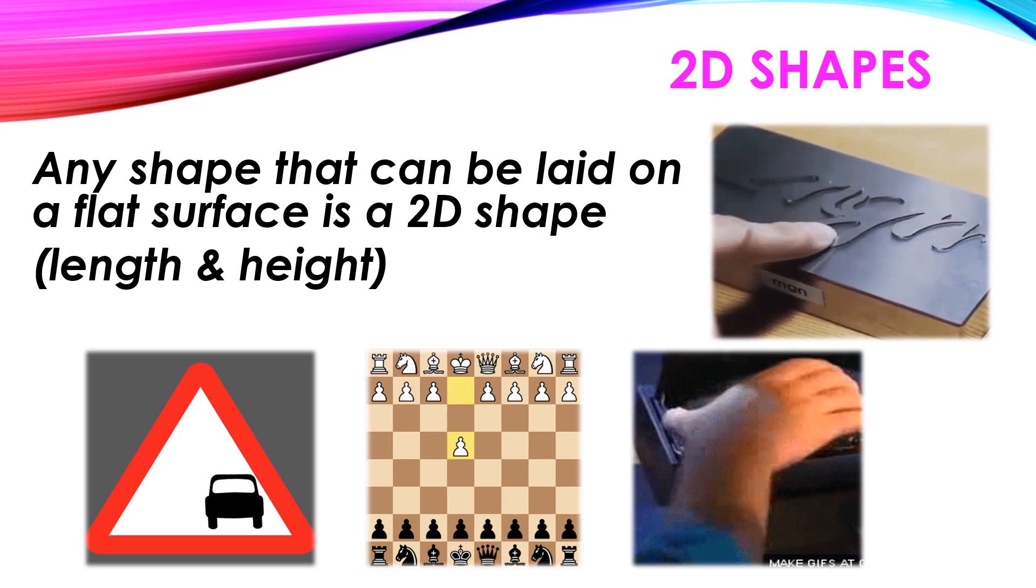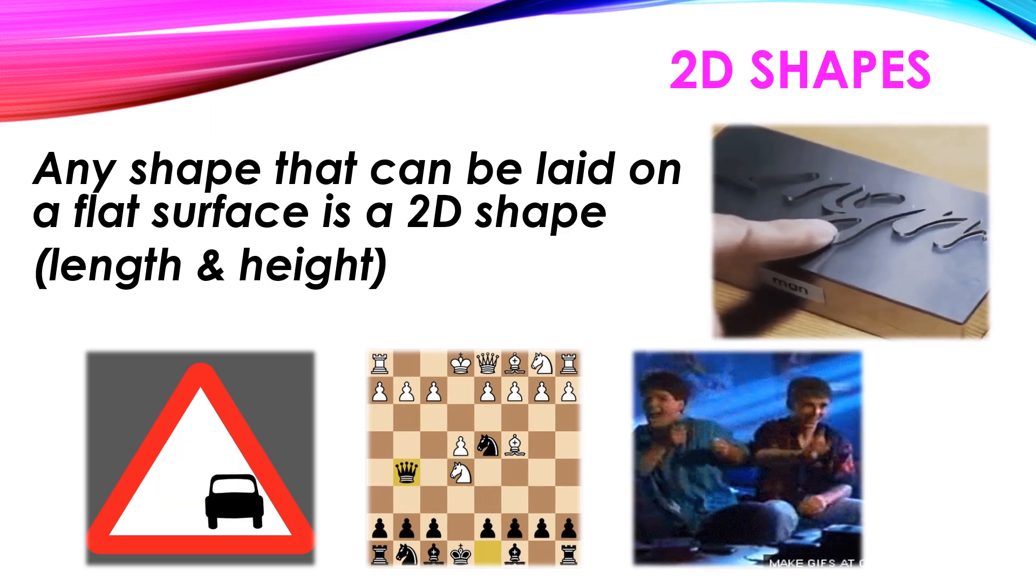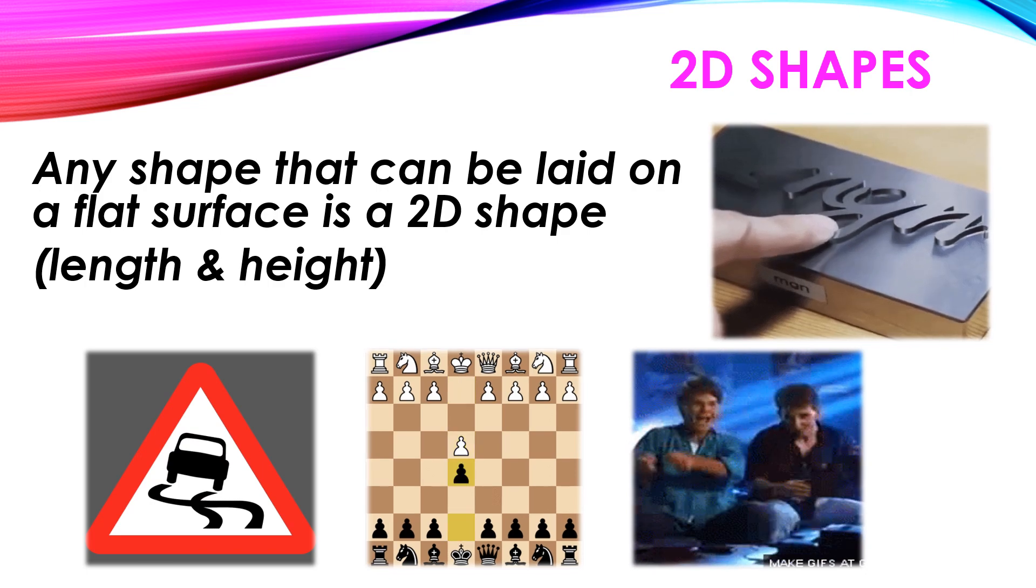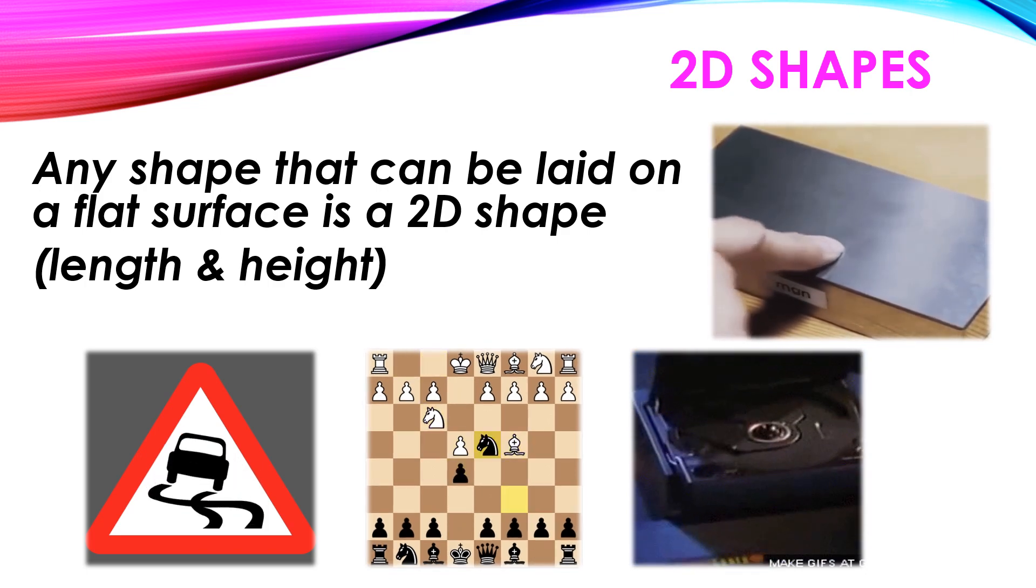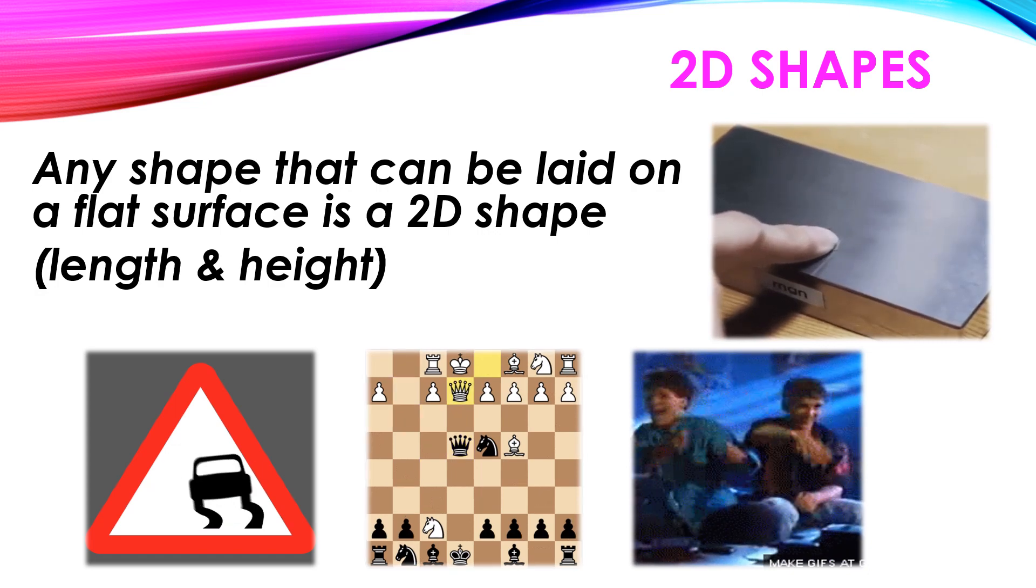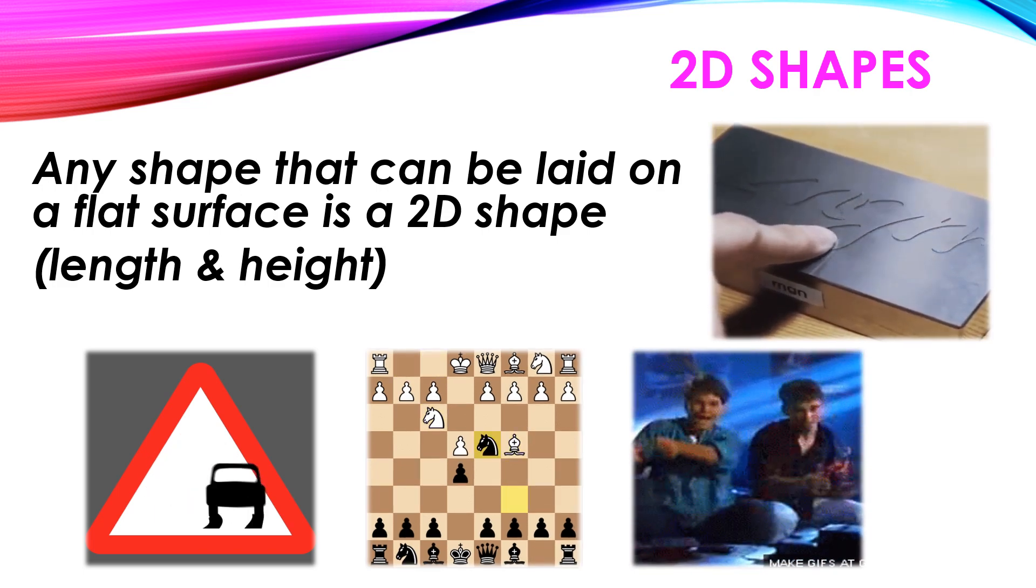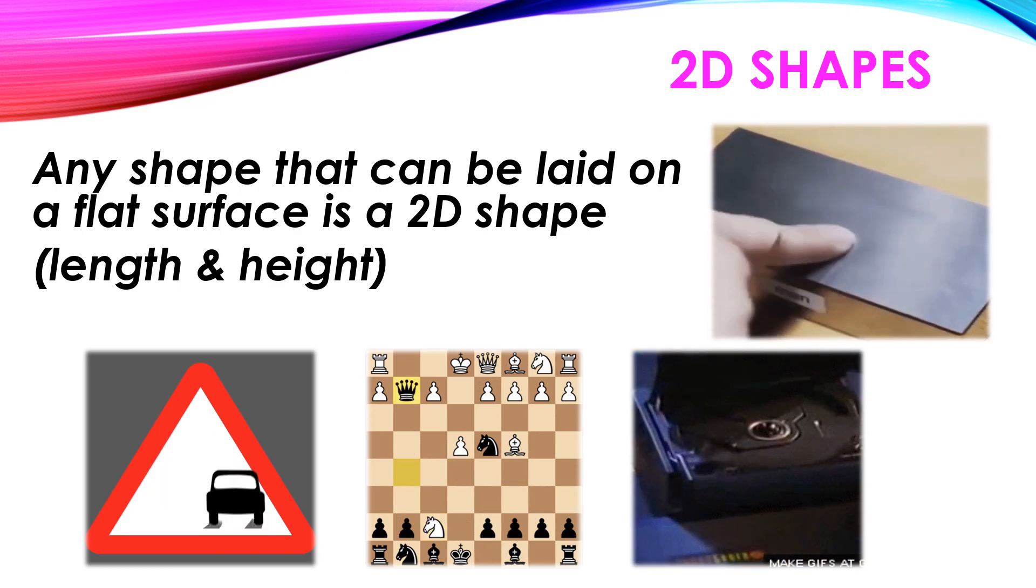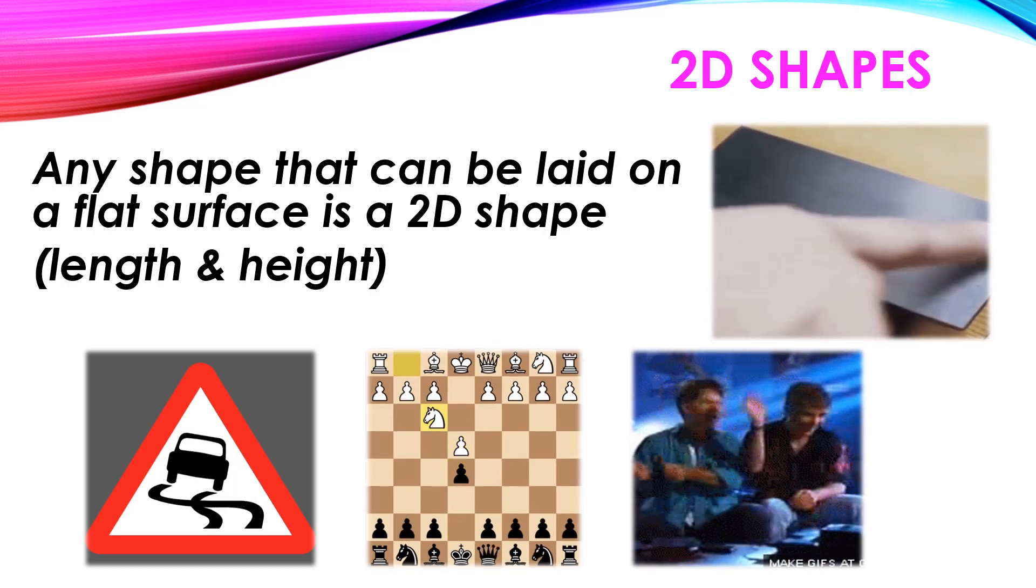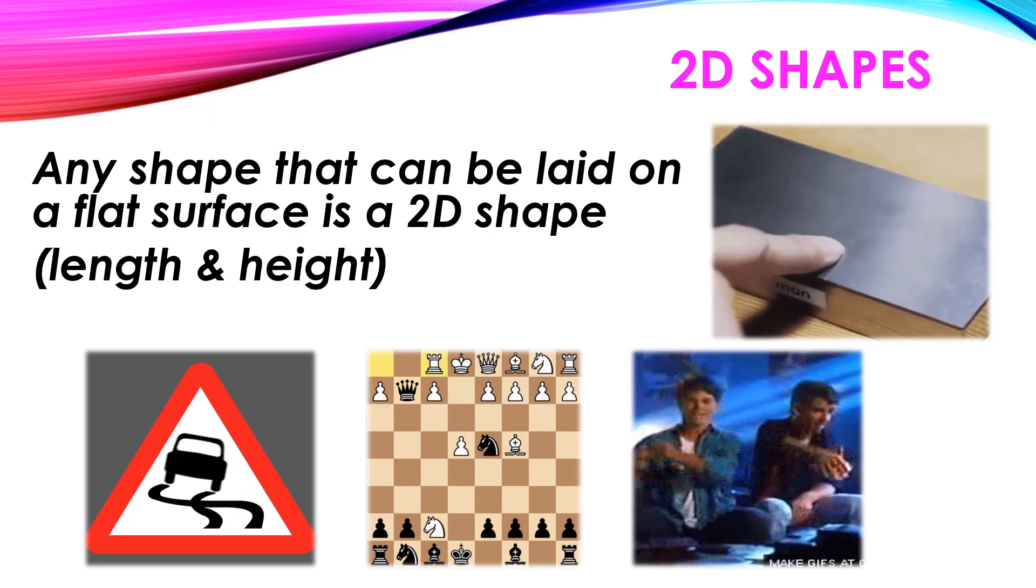Look at this traffic sign board. This board is also on a flat surface only. Next one is chess board. Chess board also, we all played, so it is also in a flat surface. It is also a good example for 2D shapes. Third one, these guys are enjoying. He is fixing some CD and then enjoying the music. So CD is also one example for 2D shape.